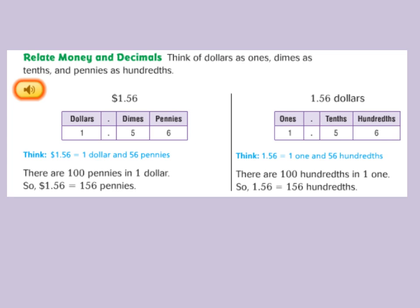Now we are going to think of dollars as ones, dimes as tenths, and pennies as hundredths. So if I have one dollar, five dimes, and six pennies — as shown in our sample — I have a dollar and fifty-six cents. That means I have one whole dollar, five dimes which is fifty cents, and six pennies which is six cents. One hundred pennies are in a dollar, so one dollar and fifty-six cents is equivalent to one hundred and fifty-six pennies, or one and fifty-six hundredths dollars.